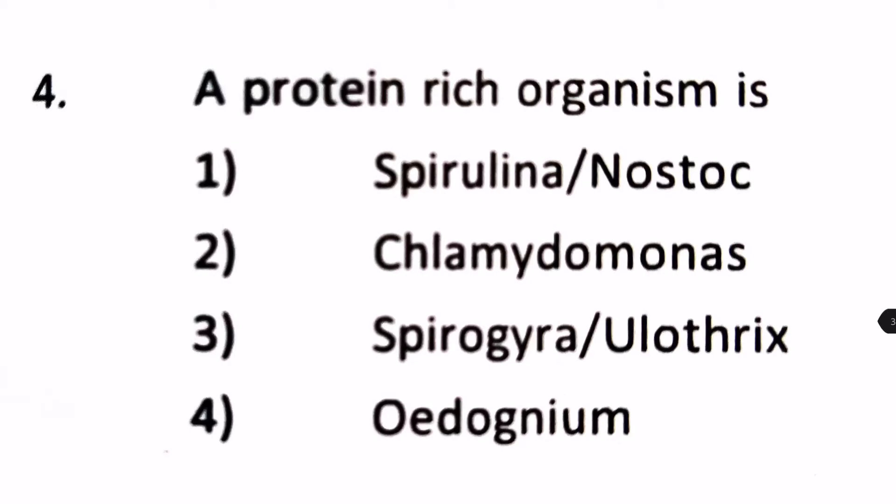Next question, a protein rich organism is 1. Spirulina/Nostoc, 2. Chlamydomonas, 3. Spirogyra or Ulothrix and 4. Oedogonium.